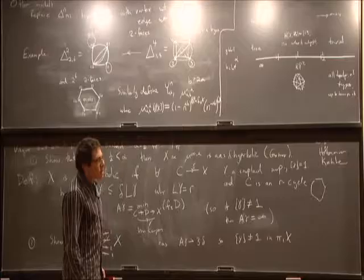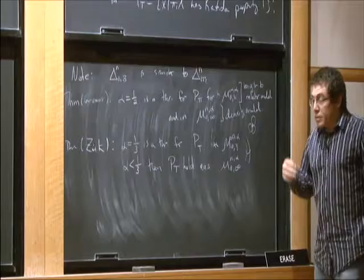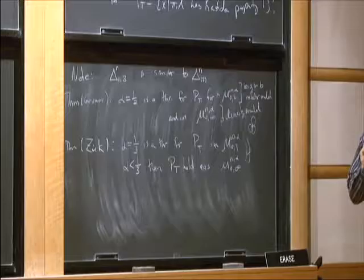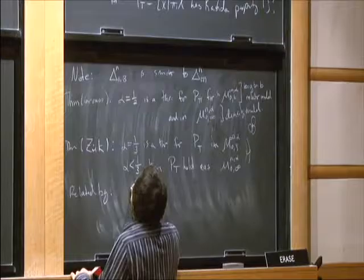Are these models interesting for some independent reason, or only because you can prove things about them? That's a good question. The other models I'll mention have independent interest. By jacking up from A = 0 to A = 1 (and higher), you're somehow building more geometry into it, but I don't really understand how or why that would be particularly nice geometrically.